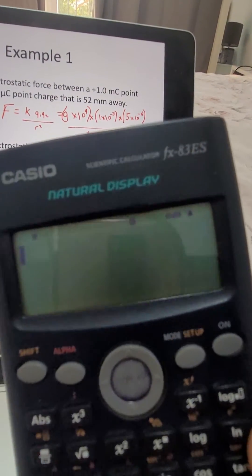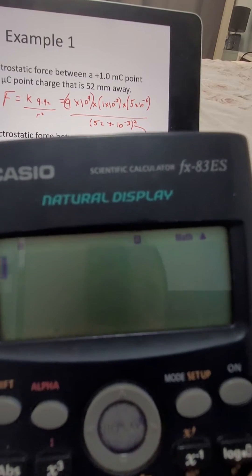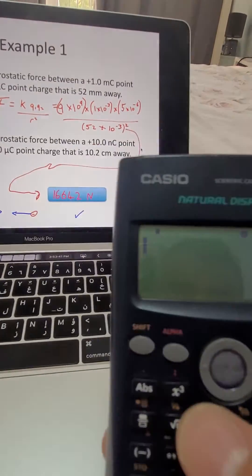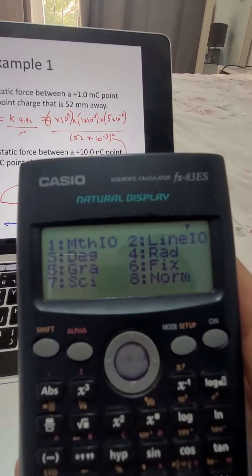First things first, we're always using degrees in physics, especially when we're starting doing angles and things. We want to change that R, if you have it, to degrees. So to make sure you calculate in degrees, you press shift, setup, and number 3 for degrees. Okay, it should say D at the top.